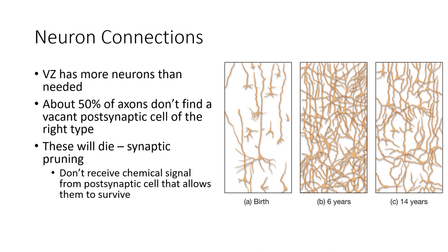More specifically, neurons that don't find a post-synaptic cell don't receive the chemical signal from a post-synaptic cell telling them to survive. When a neuron finds a vacant cell and makes a connection, it receives that chemical signal to stay alive. But those that don't match up with a post-synaptic cell don't receive that signal and die off — they become pruned. This is a very important process — cleaning out unneeded neurons.